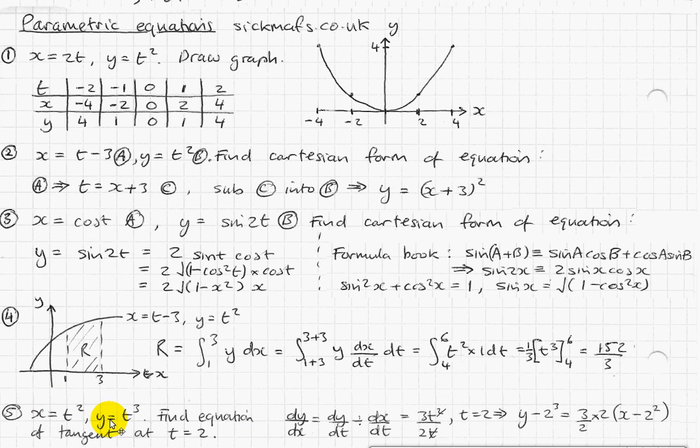And dy by dt is simply 3t squared. So, dy by dt divided by dx by dt is going to be 3t squared divided by 2t, which it says here. And if you cancel it out a little bit, that squared cancels out with a t, so you simply get 3t over 2.